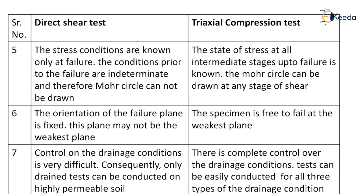In direct shear test, the stress conditions are known only at failure. The conditions prior to failure are indeterminate, and therefore Mohr circles cannot be drawn — we can only get the failure envelope. In triaxial compression test, the state of stress at all intermediate stages up to failure is known, that's why Mohr circles can be drawn at any stage of the shear.